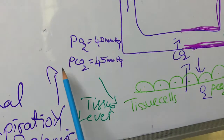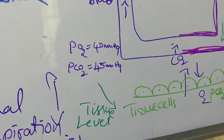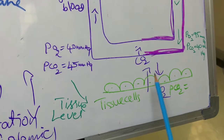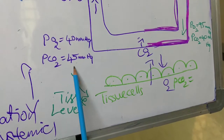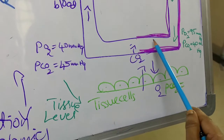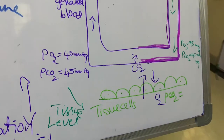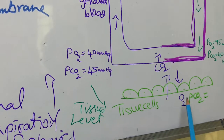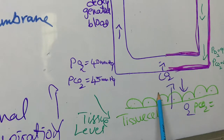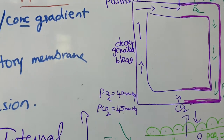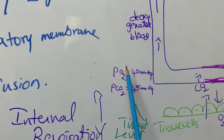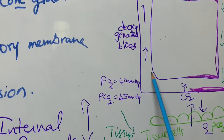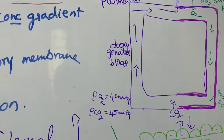In tissues, the partial pressure of CO₂ is 45 mm Hg, while in the oxygenated blood it is 40 mm Hg. So carbon dioxide from tissues moves into the blood, while oxygen moves from blood to the tissues. As oxygen is released to tissues, blood becomes deoxygenated. In deoxygenated blood, pO₂ is 40 mm Hg and pCO₂ is 45 mm Hg.